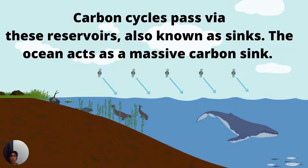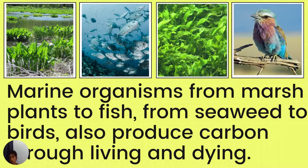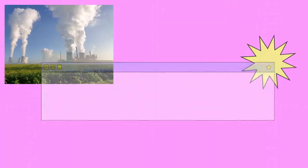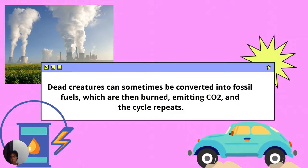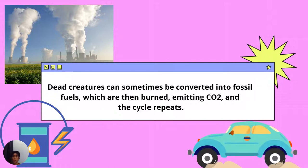The ocean acts as a massive carbon sink. Marine organisms — from marsh plants to fish, from seaweed to birds — also produce carbon through living and dying. Dead creatures can sometimes be converted into fossil fuels, which are then burned emitting CO2, and the cycle repeats.